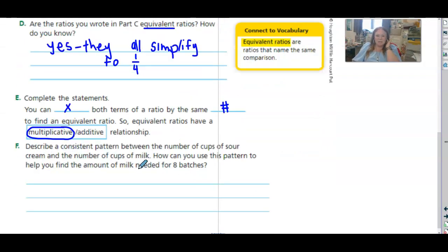Okay, describe a consistent pattern between the number of cups of sour cream and the number of cups of milk. How could you use this pattern to help you find the amount needed for eight batches? So that's what I want us to do. So we know we needed one and four. So if I wanted to make eight of these, what will this ratio be here?